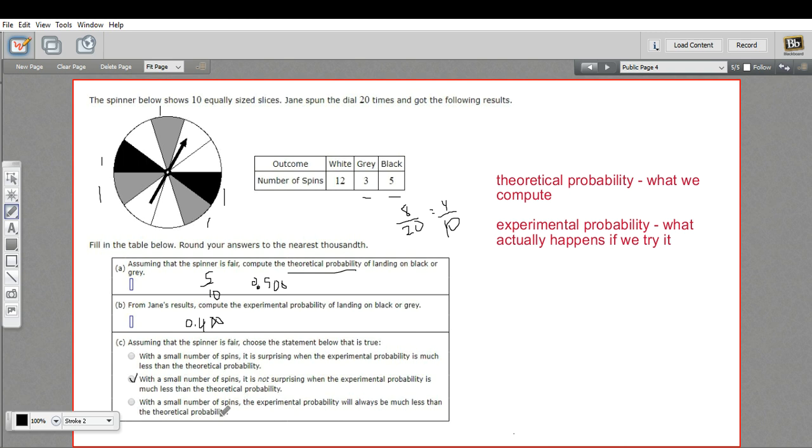So this third part, sometimes you'll see the question with a small number of spins. Sometimes you'll see it with a large number. The thing to remember is that the larger the number of trials, the closer the experimental probability should get to the theoretical probability. So that's a little bit of work with theoretical and experimental probability.